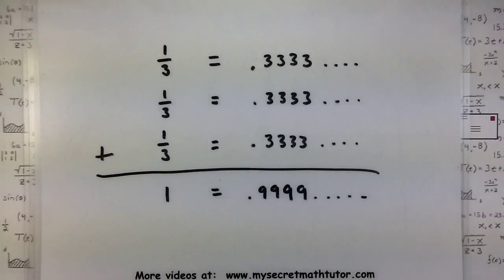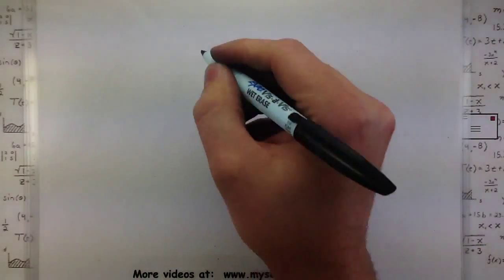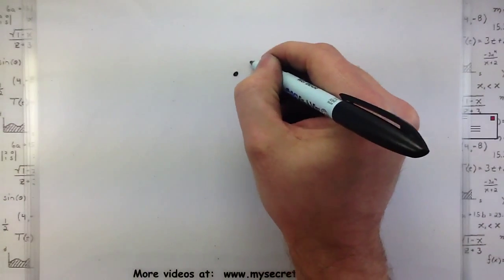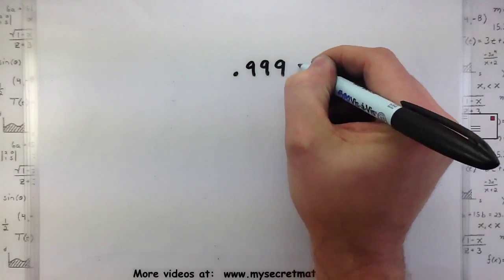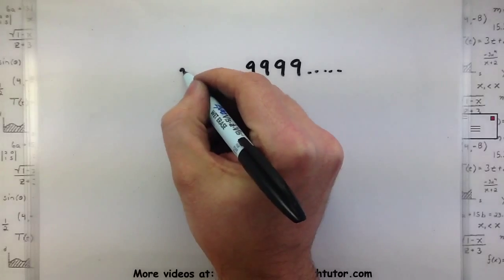Now you might be saying, wait a minute, does this always work? Can you show me another situation where these two things are really equal? And fortunately I can. Let's do this another way. Suppose I start out with our number 0.999 repeating, and let's go ahead and just call this thing maybe n.